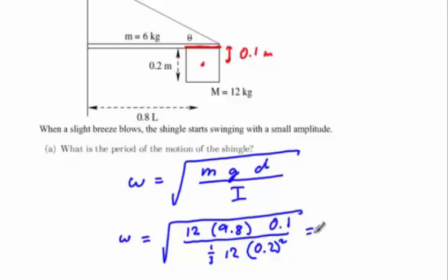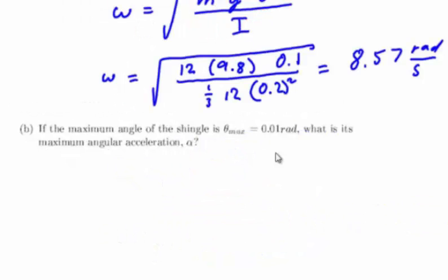This will yield the numerical result 8.57 rad per second. In part B of the problem, we're asked to find the maximum angular acceleration if the maximum value of θ is 0.01 radians.